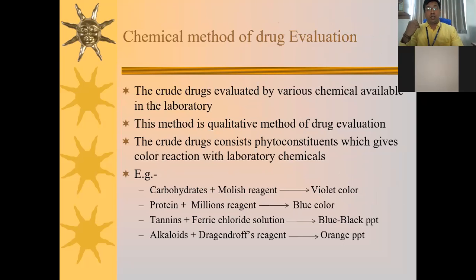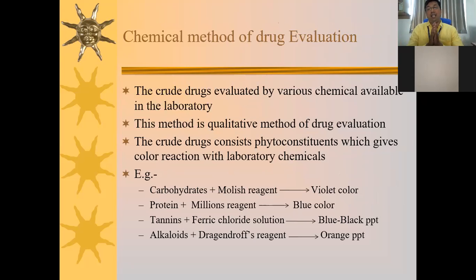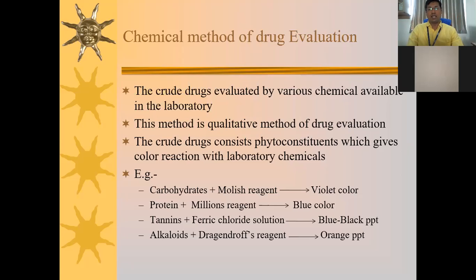The chemical method of drug evaluation involves evaluating drugs with the help of various laboratory chemicals. It is a very simple and authentic method, and to date it is widely used for drug identification. The crude drugs are evaluated by various chemicals available in the laboratory.